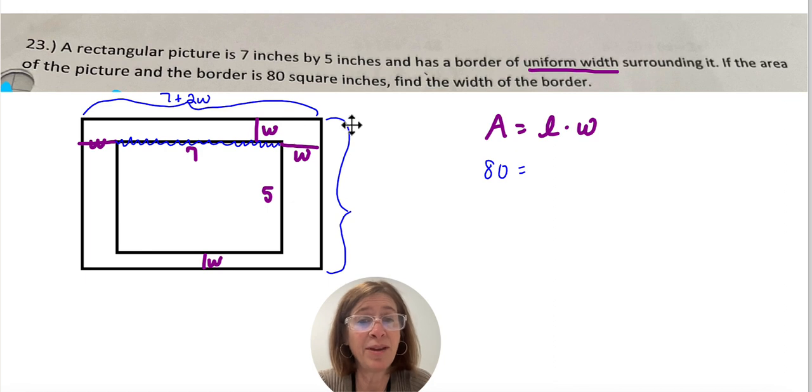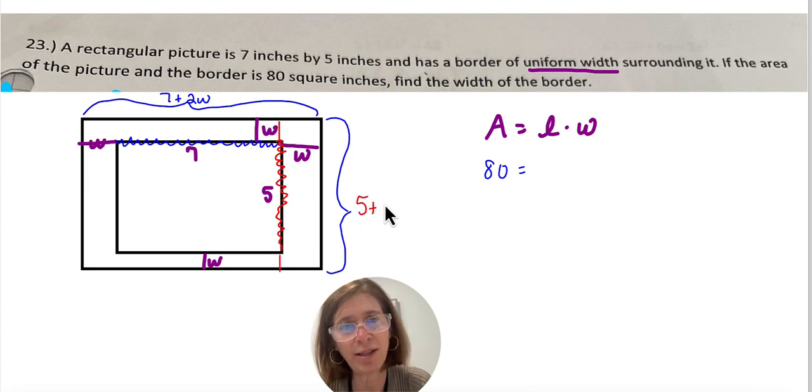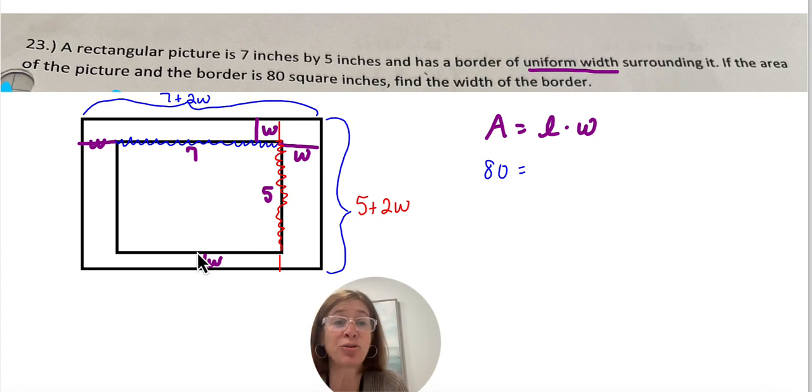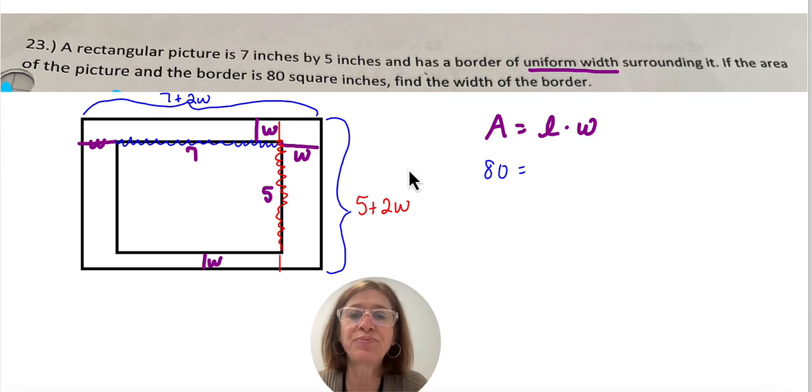And then the same thing on the other side. If I know that this right here is 5, and then this is W, and this is W, this would be 5 plus 2W. Why addition? Because we're adding the two additional widths. The reason you can't define it directly is because it's actually not a rectangle. It's like these strips that go all the way around it.